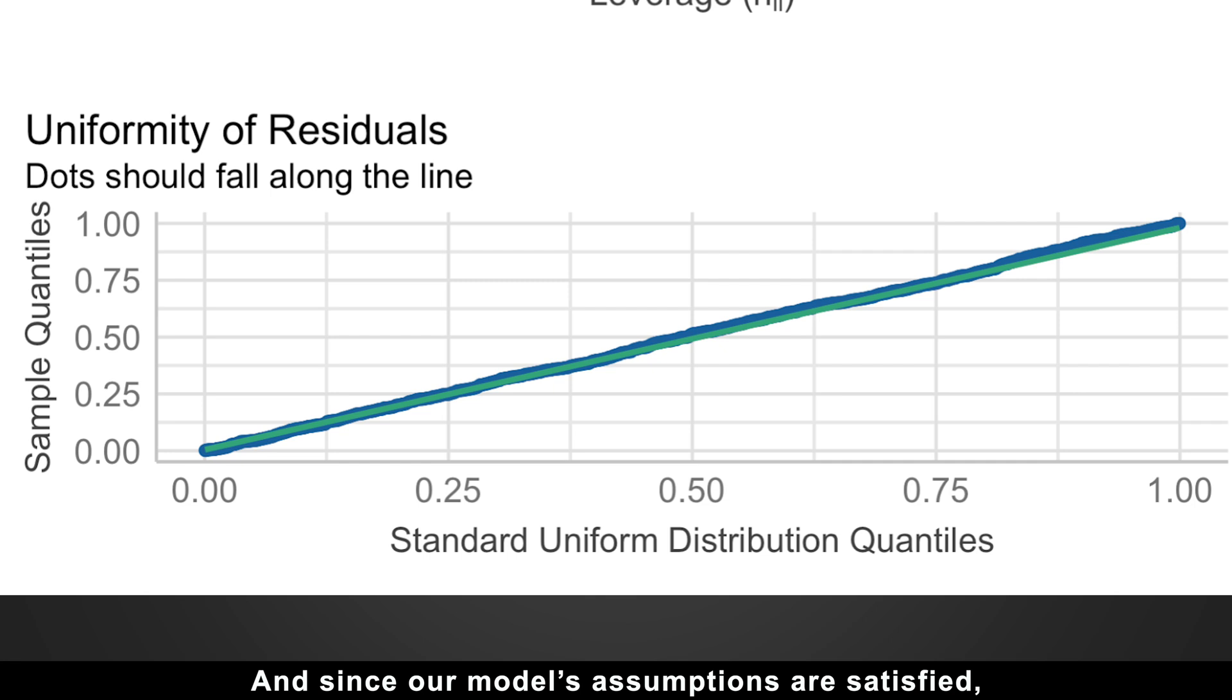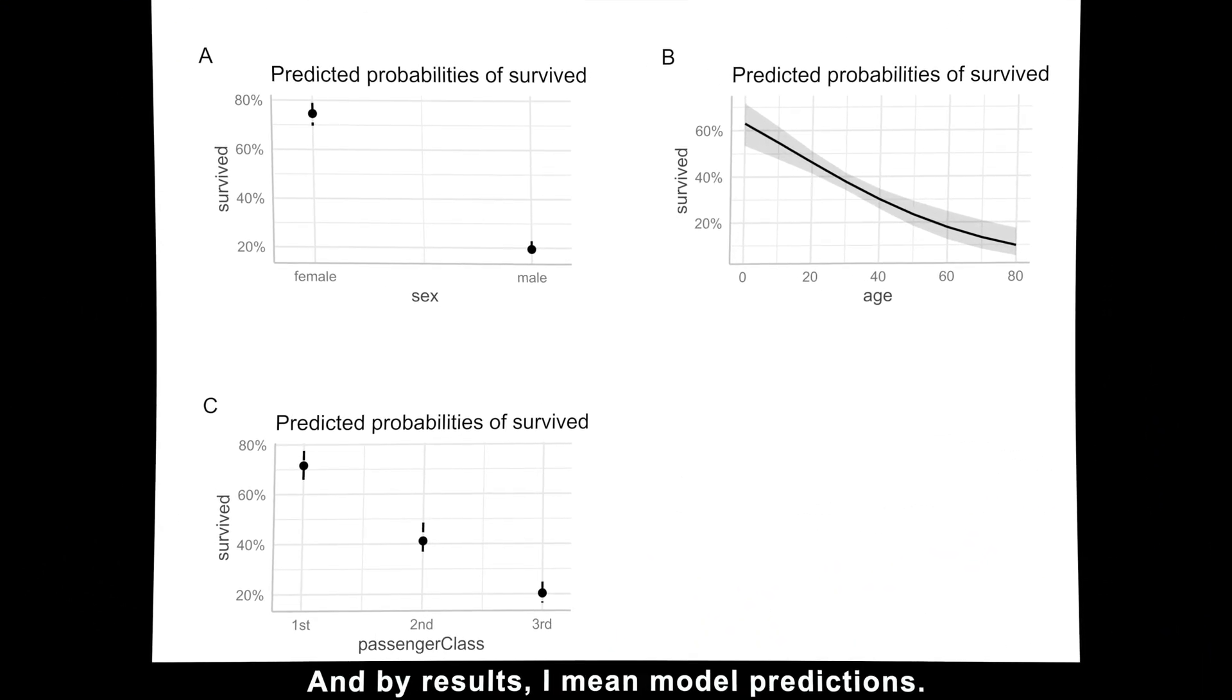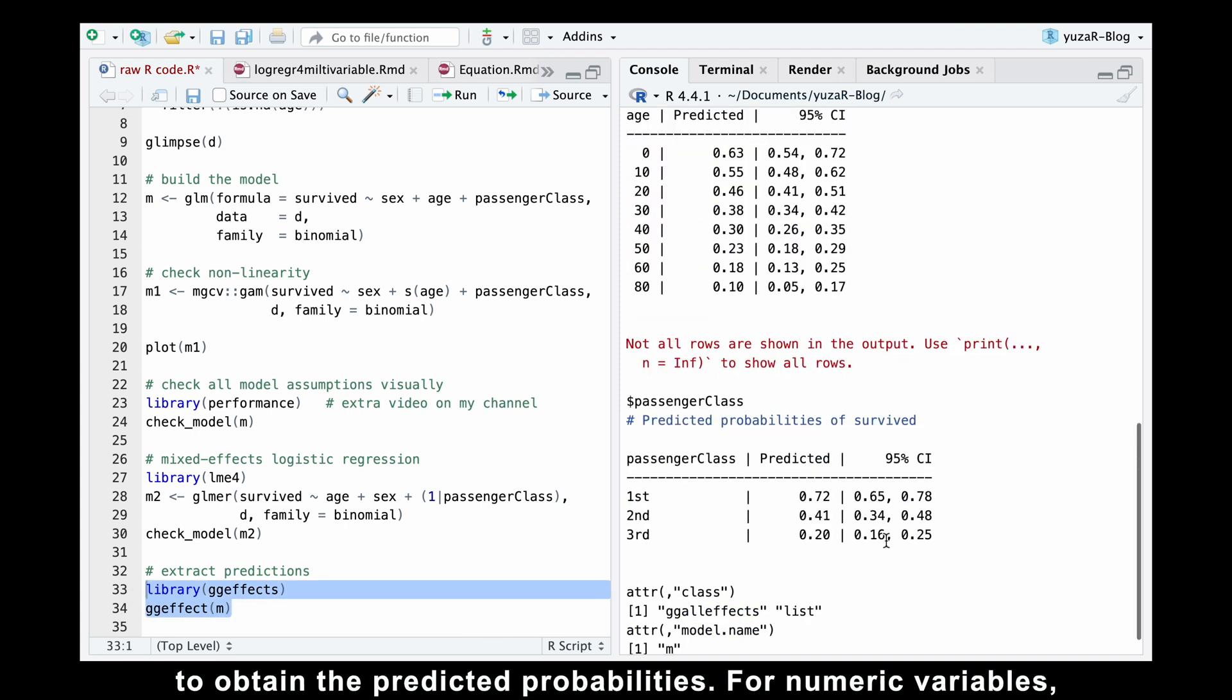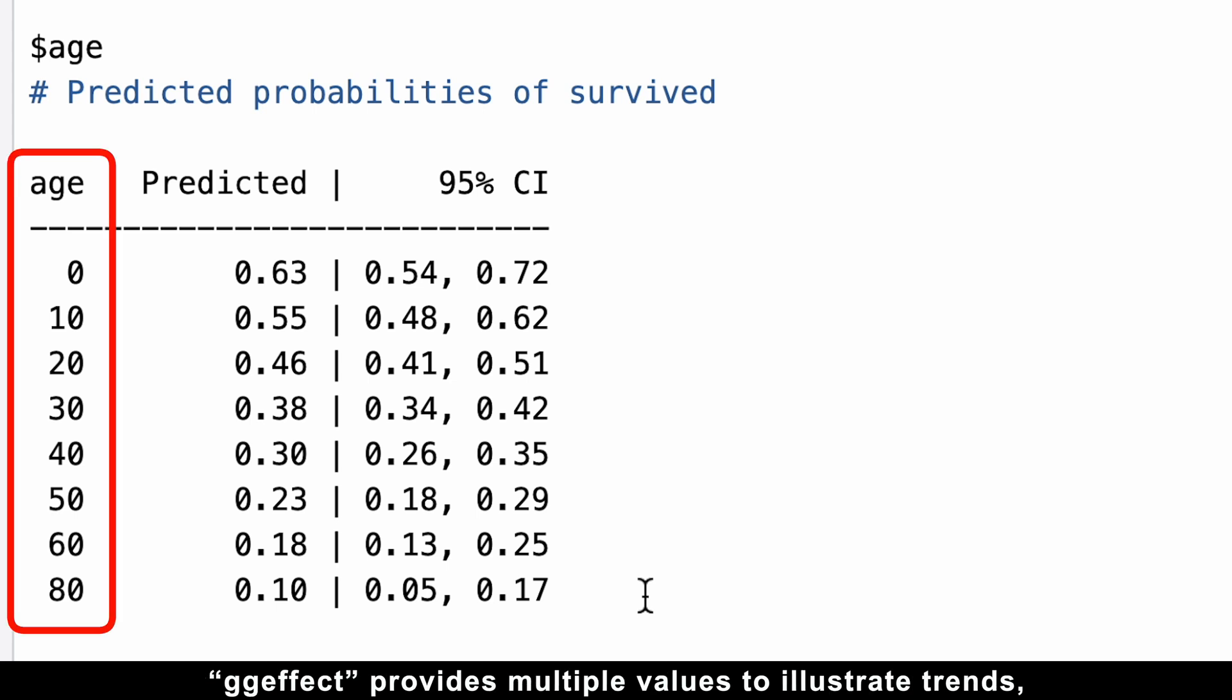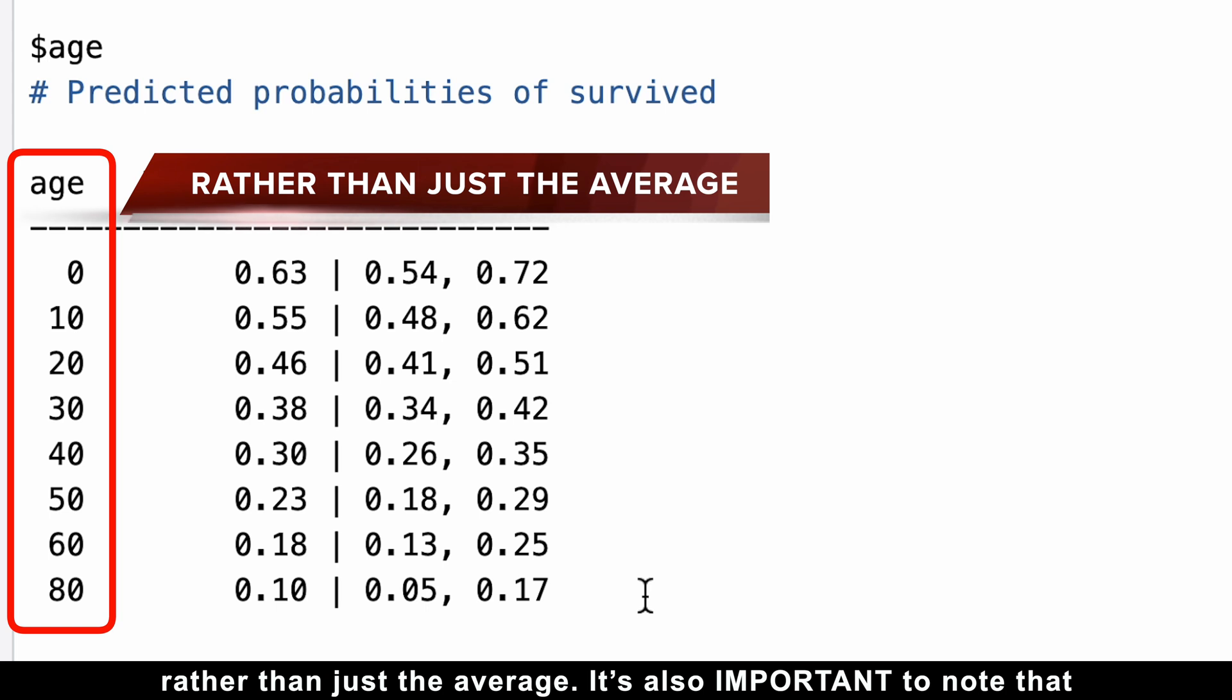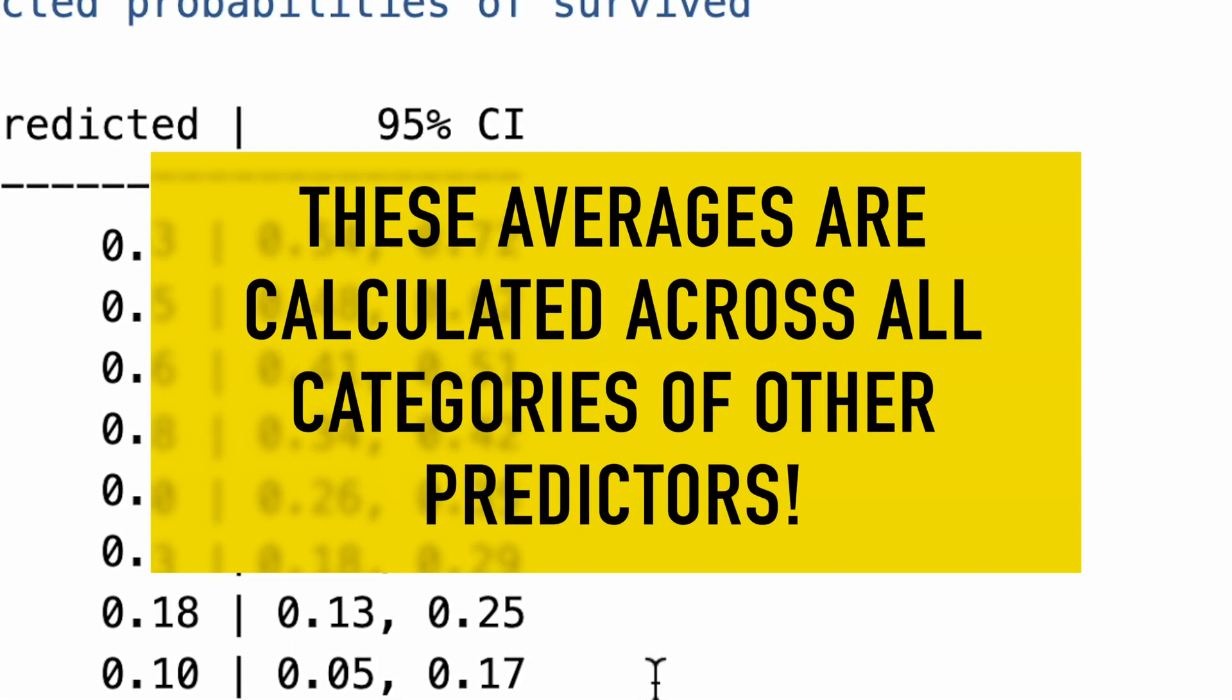And since our model's assumptions are satisfied, we can now visualize the model results. And by results, I mean model predictions. We'll begin by using the ggeffect function from the ggeffects package to obtain the predicted probabilities. For numeric variables, ggeffect provides multiple values to illustrate trends rather than just the average. It's also important to note that these averages are calculated across all categories of other predictors.